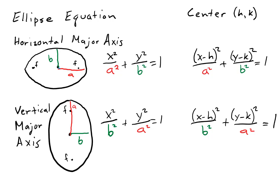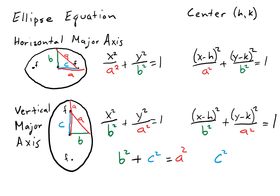The distance from the center to a focus is called C. We can form a right triangle with corners at the center, one end of the minor axis, and a focus. The hypotenuse of this triangle is A, the same length as the distance from the center to one end of the major axis. Because this is a right triangle, we get a Pythagorean relationship: B squared plus C squared equals A squared. So C squared equals A squared minus B squared.